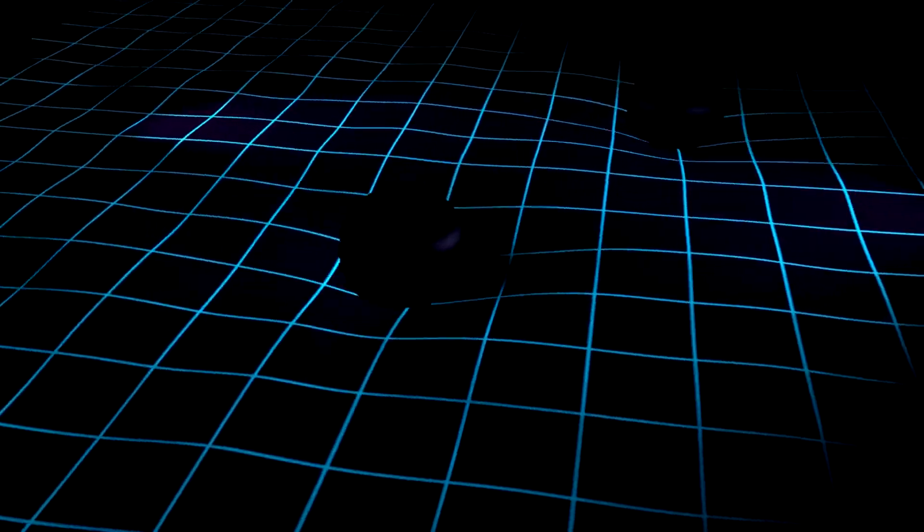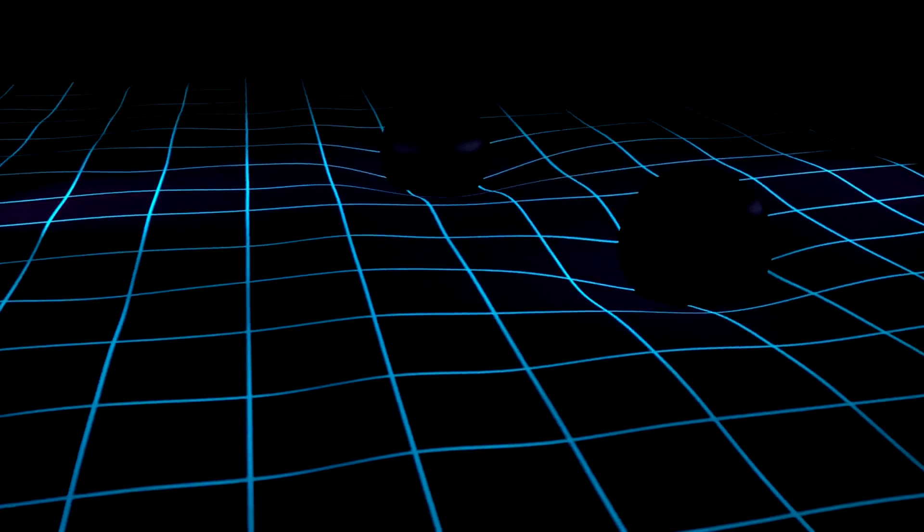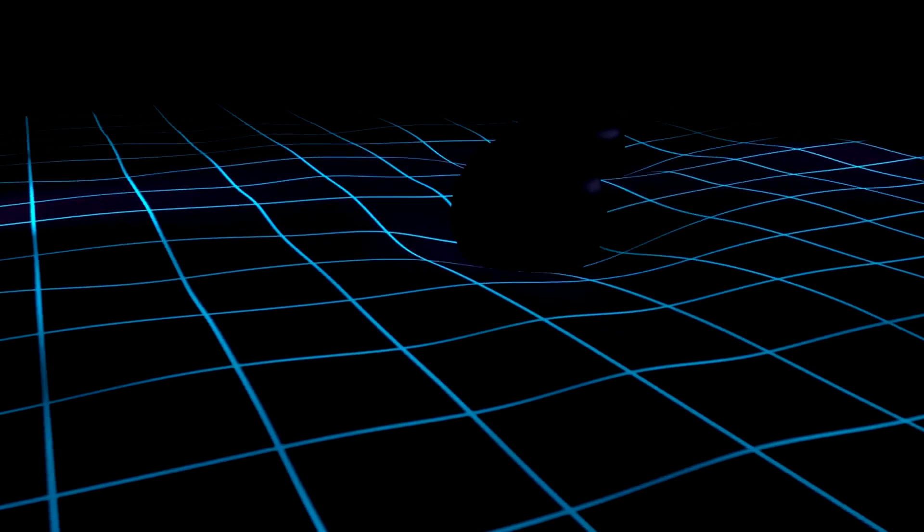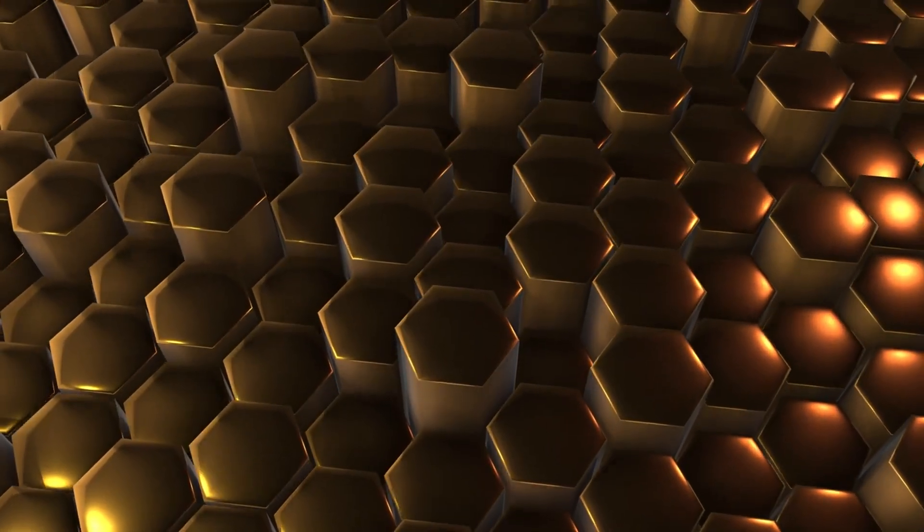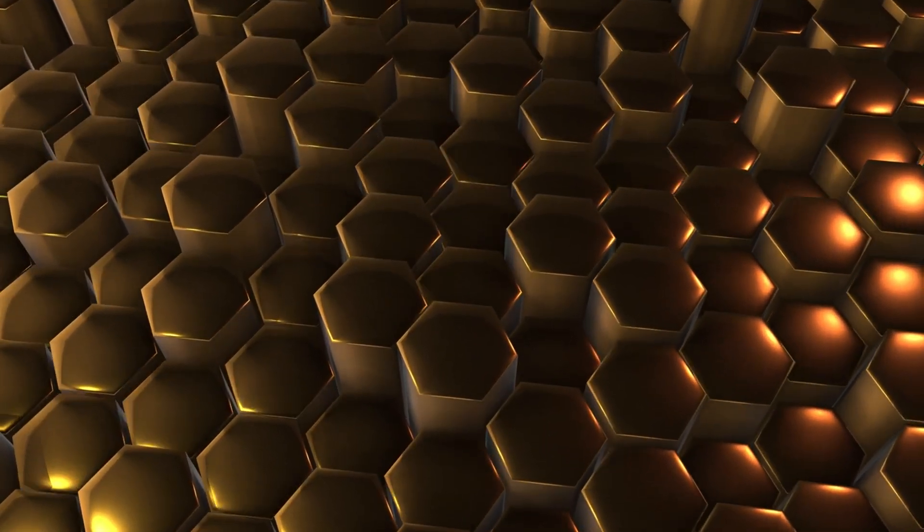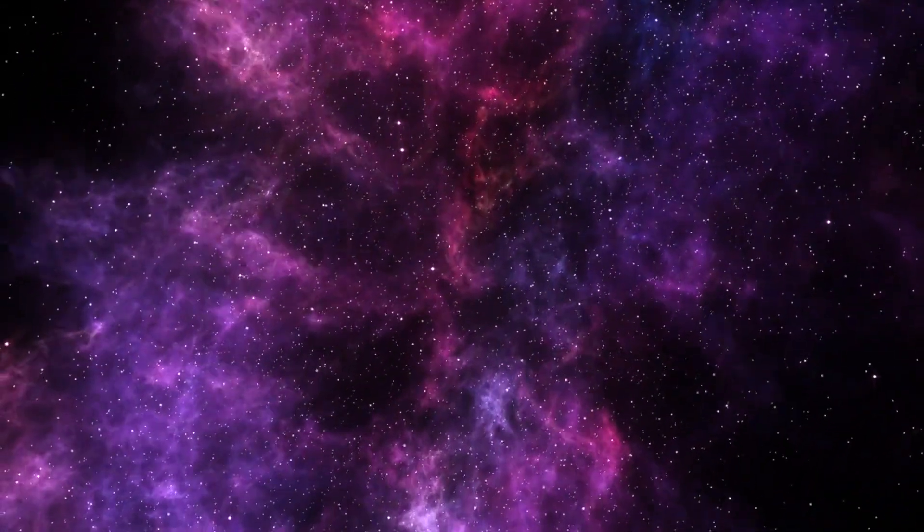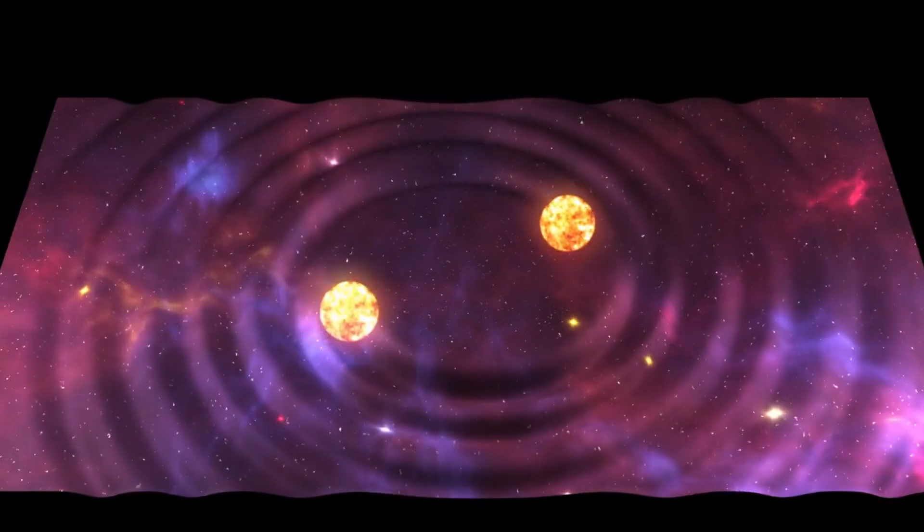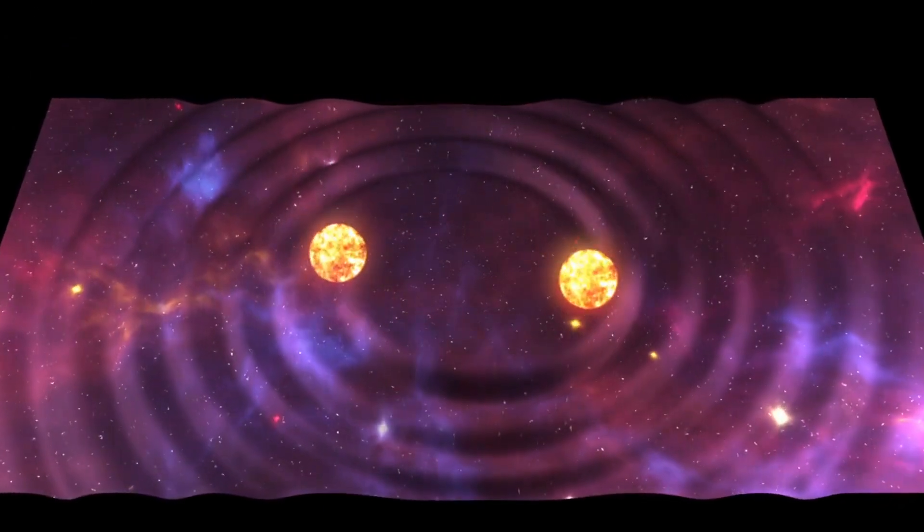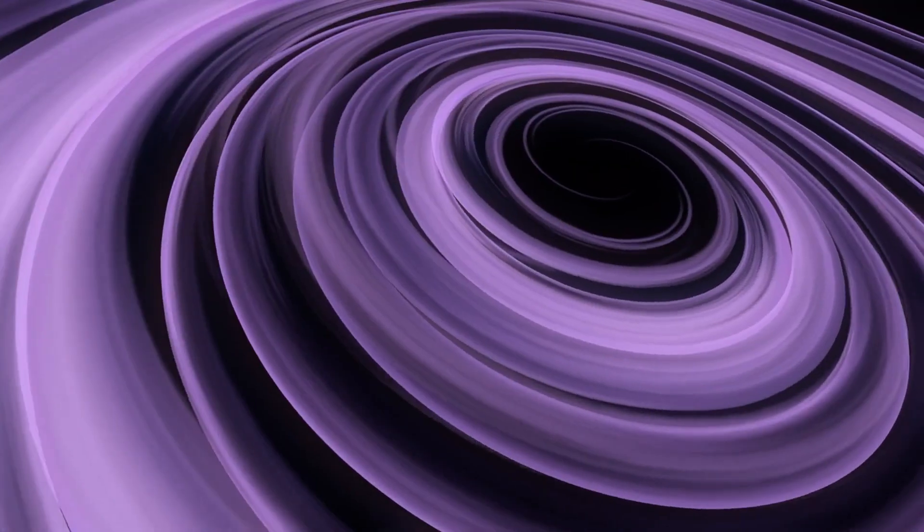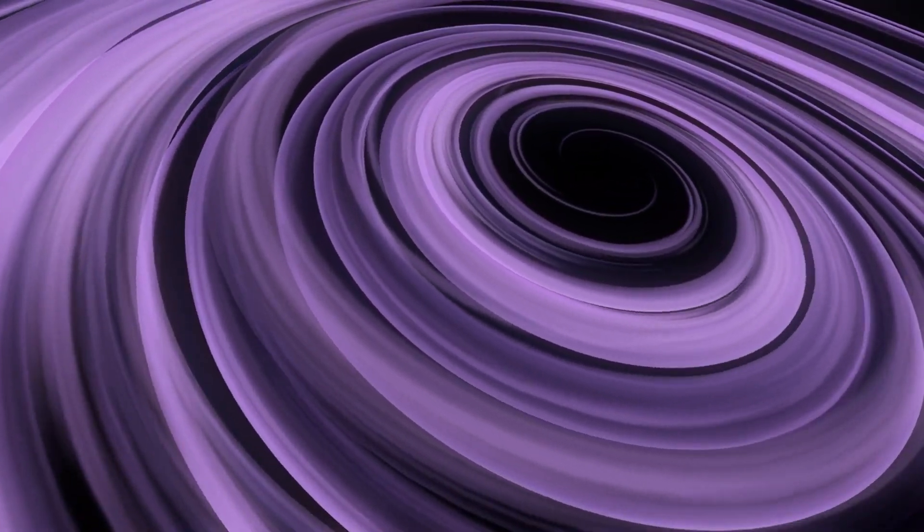The formation of a black hole from Betelgeuse could produce gravitational waves, ripples in space-time caused by the acceleration of massive objects. These waves can be detected by observatories like LIGO and VIRGO, offering a new way to observe cosmic events and validate predictions of general relativity. The merging of black holes or neutron stars also produces gravitational waves, which have already provided crucial evidence of these objects' existence and characteristics.